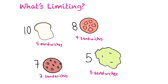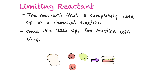Looking at those numbers, we can see quickly which is our limiting reactant — the salami. We're only able to make two sandwiches total. The limiting reactant is the one completely used up in a chemical reaction, and once it's used up the reaction stops. It doesn't matter if you have extra bread, tomatoes, or lettuce; you can't make any more sandwiches without more salami.